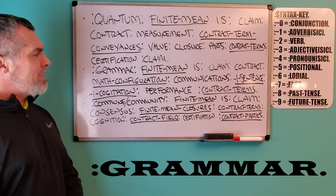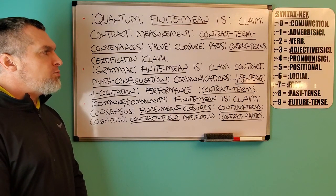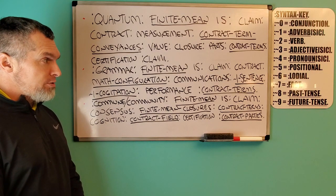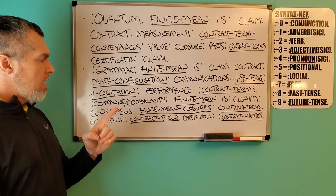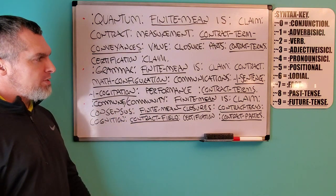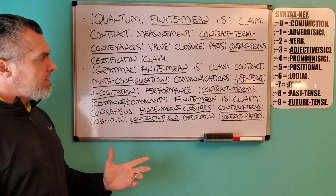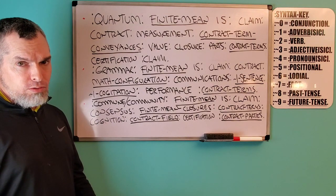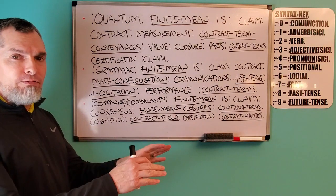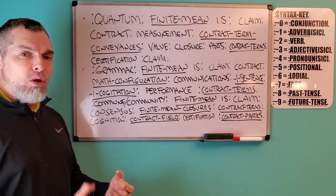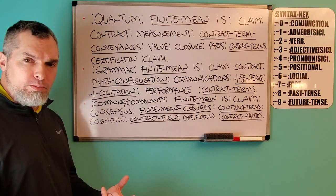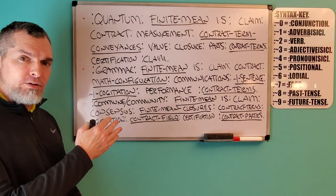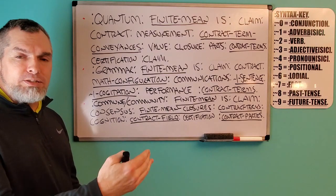The next term is grammar. The grammar of this finite mean is: with the claim of the contract, with the math configuration of the communications, with the one sentence, with the one cogitation, with the performance, by the contract terms. A grammar is a claim of the contract with the math model of the communications — what you're conveying with the one sentence, one cogitation. Meaning you have one thought, one thinking per sentence, one verb of thinking per sentence, which is how you construct a correct sentence structure. You have a cause, concern, verb of the thinking, possessive, concern, possessive authority.